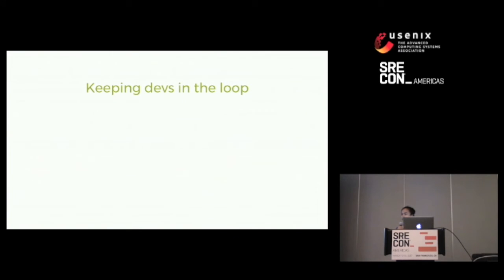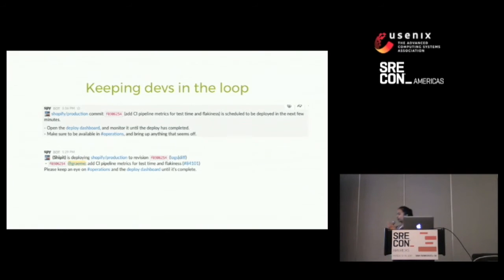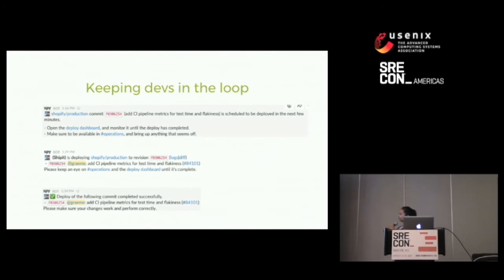You might be wondering: if hitting merge is the final step in interacting with our deploy system, how do people know when their changes have been shipped? That's where another one of our tools comes in handy — our chatops bot called Spy. When you merge your code, Spy will send you a message saying your commit has been merged and will be scheduled to deploy in the next few minutes. When the CI run and the container build are complete, you get another message that the deploy is starting. And finally, when the deploy is complete, you get one final message with a gentle reminder to go verify your changes. As you can see by the timestamps, this took around five minutes.